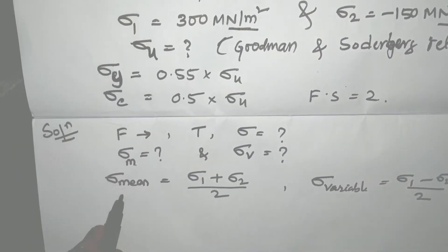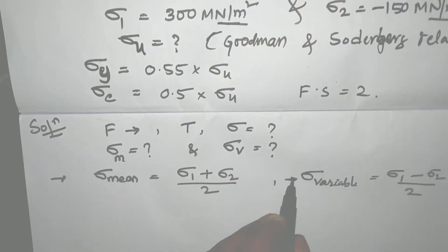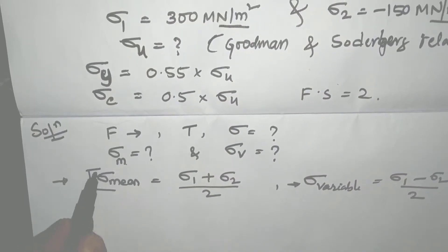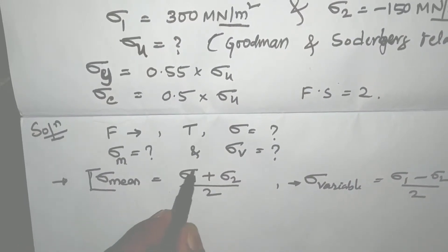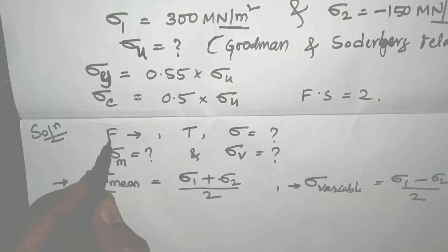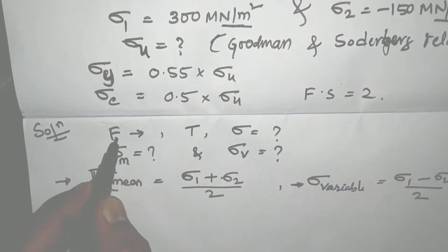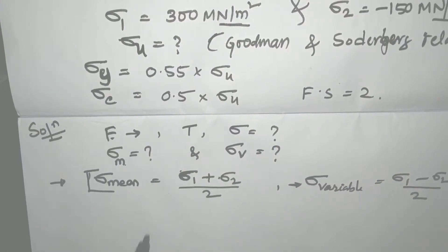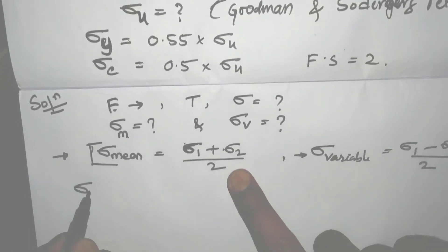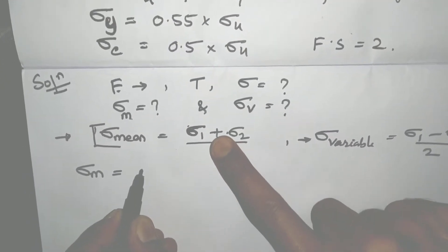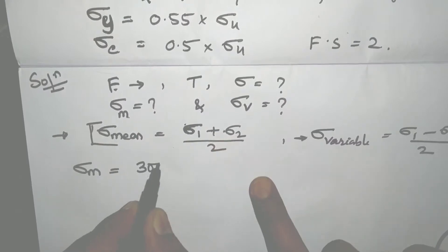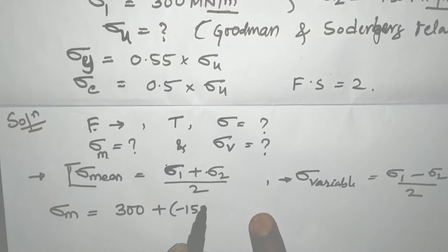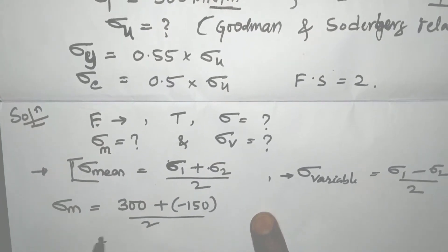For Sigma_M and Sigma_V, which will be used in the Soderberg and Goodman equations, we calculate Sigma_M as Sigma_1 plus Sigma_2 divided by 2. So Sigma_M equals 300 plus (minus 150) divided by 2, which gives 150 divided by 2, equaling 75 MPa.